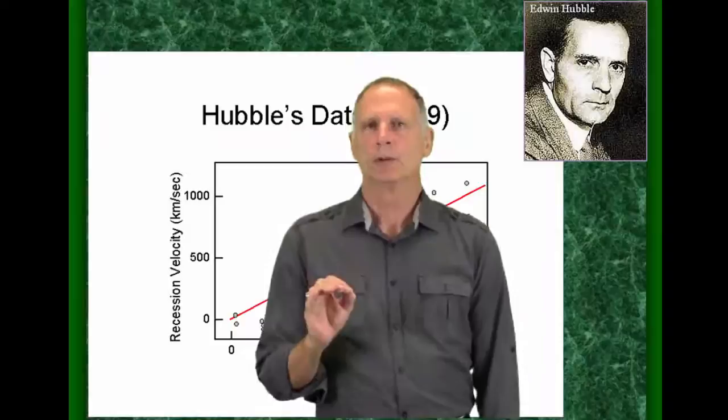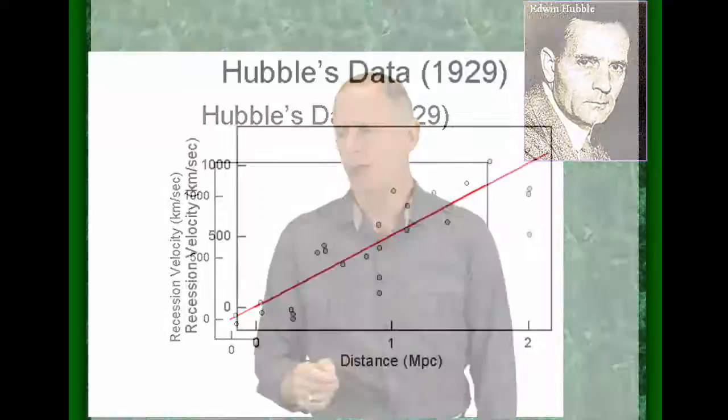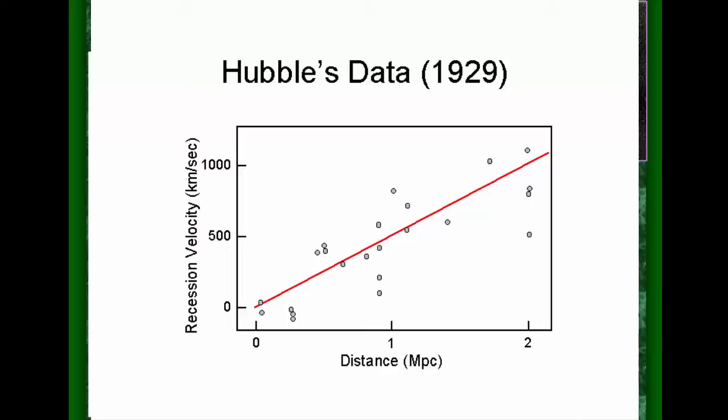As we talked about last time, Edwin Hubble was able to use Cepheids to get distances to stars. He also used apparent brightness to get distances to stars, and he was able to come up with this graph. It's probably the most famous graph ever made, or certainly one of the most famous in astronomy, because it really tells us an immense amount about our universe.